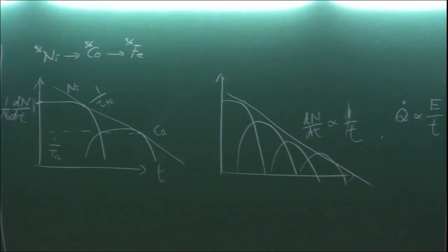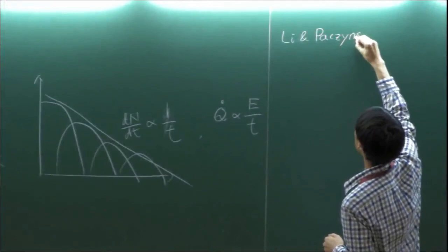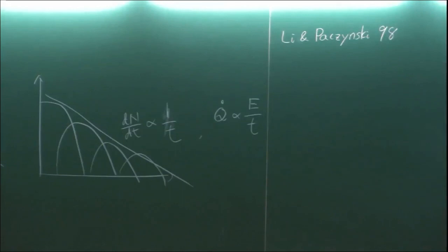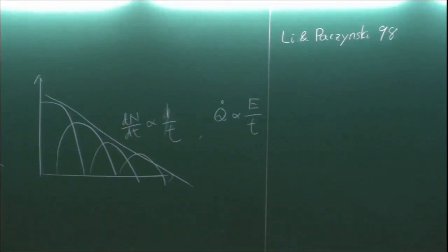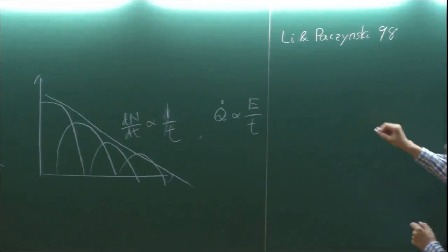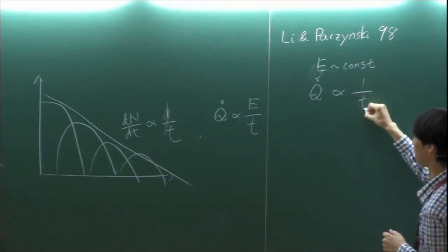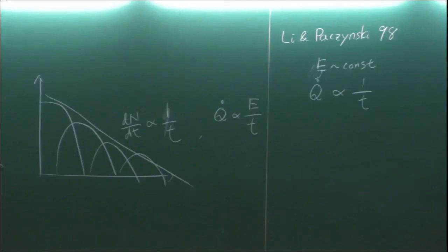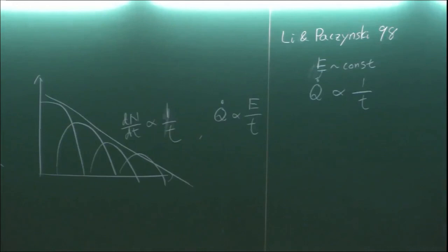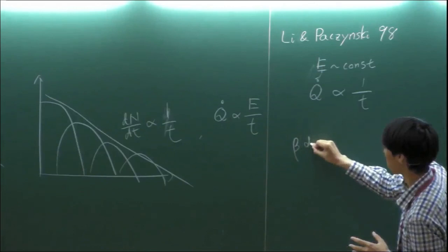This famous first paper on kilonova discussed a radioactive-powered neutron star merger counterpart. They assumed constant decay energy E, giving Q-dot ~ 1/t. But in beta decay there is an important relationship between lifetime and decay energy: if the decay energy is large, the lifetime is shorter. This is a strong power-law relationship — decays with high energy are short-lived, and those with low energy are longer-lived.